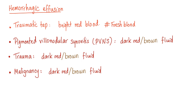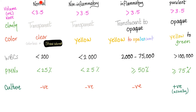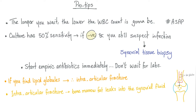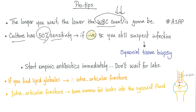What's a traumatic tap? It's when you injure your patient while inserting the needle. Here is the famous table: normal, non-inflammatory, inflammatory, and purulent — discussed in previous videos. Some tips for the pros: the longer you wait, the lower the white blood cell count is going to be in the joint fluid aspirate. So you should run the test as soon as possible; otherwise you will misdiagnose the patient as normal where in fact they have an inflammatory arthritis. Culture has only 50% sensitivity — which is like flipping a coin.